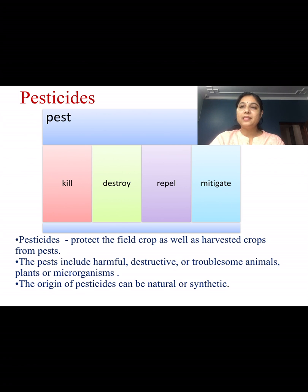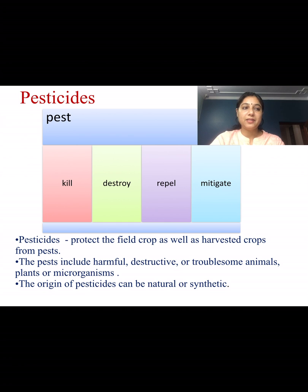The term pesticide is a broader term used for a variety of agents classified specifically on the basis of the pattern of use and the target organism — as insecticides for insects, fungicides for fungi, and herbicides or weedicides for herbs and weeds.